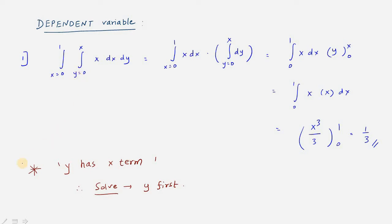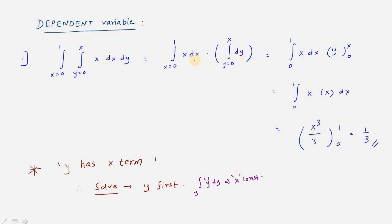Here is the key concept: if the y limit has the x term, solve y first. This means you integrate with respect to y, treating x as a constant. In this example there is no y term in the function, so you compute the integral of dy from y = 0 to y = x. That gives y evaluated from 0 to x, which equals x.